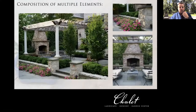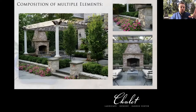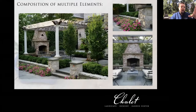I also wanted to circle back to this example we saw earlier because it's not a huge space, but it shows a beautiful composition of different elements: a nice pergola, structural and architectural plantings to help frame things, nice boxwood hedges and some upright hornbeams, a low wall with accents where you could have nice pots on the columns, and an outdoor fireplace — all of these things working together to make a beautiful backyard space.